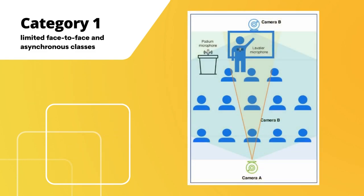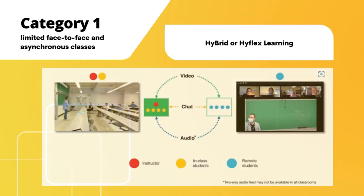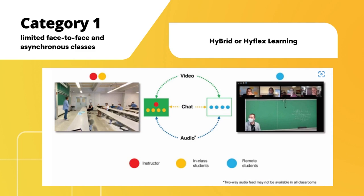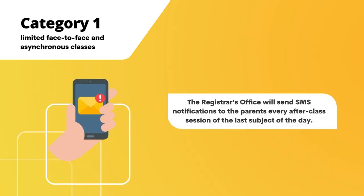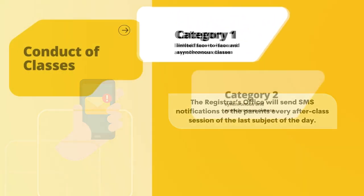Faculty members teaching Category 1 classes who have the necessary ICT equipment can proceed with hybrid or HyFlex learning, in which the instructor delivers lectures for both students in the classroom and students on the video conferencing platform. However, HyFlex lectures shall be clearly specified in course guides, and the teacher must be present in the classroom. The Registrar's Office will be sending SMS notifications to the parents of the students after each class session of the last subject of the day.